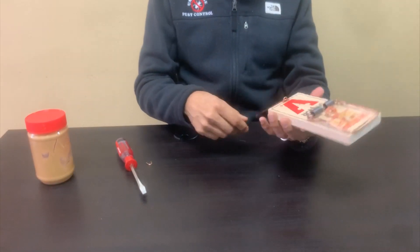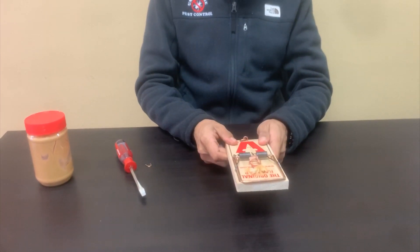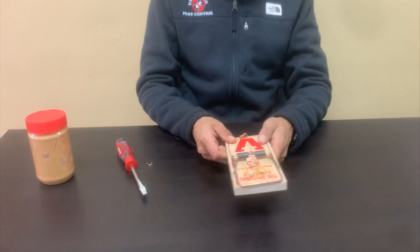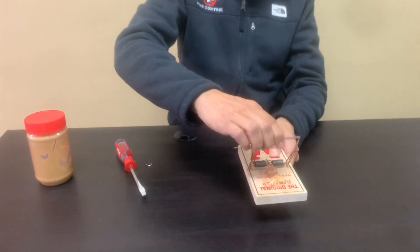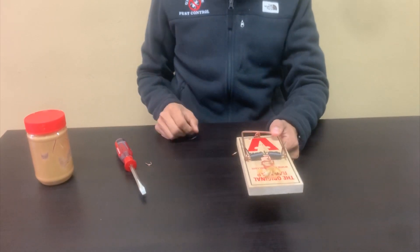To set the trap, make sure you brace the back of the board where the hold down bar is located. Always keep your hand safely away from the hammer. With one hand bracing the back, carefully pull back the hammer with the opposite hand. Keep the hammer back with your thumb.